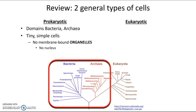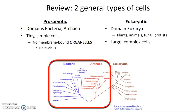Cells that are eukaryotic are found in organisms in the domain eukarya or eukaryota — those are the plants, the animals, the fungi, and the protists. They tend to have really large, complicated cells with a lot more going on in there. They do have membrane-bound organelles, and they do have a nucleus.